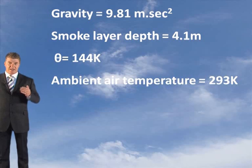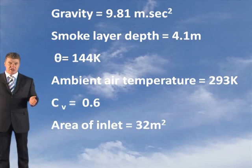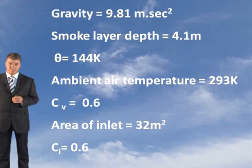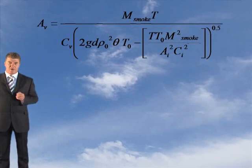Ambient air temperature can be taken as 293 degrees Kelvin. There are 32 square meters of air inlet with a coefficient of 0.6. This is the formula you should have put them into — your AV formula.